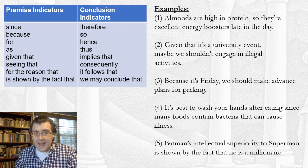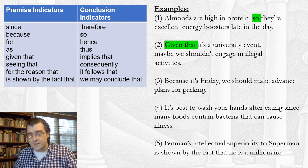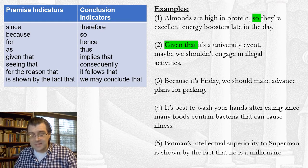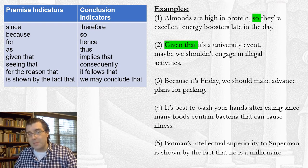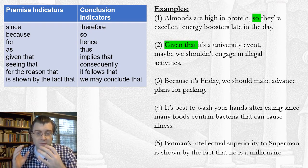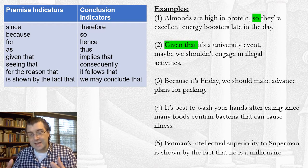You have to ask whether or not the word is being used as a conclusion indicator or as a premise indicator. Look at the first example: 'Almonds are high in protein, so they're excellent energy boosters late in the day.' Here the word 'so' is pretty clearly working as a conclusion indicator. In standard form, we'd have one premise — almonds are high in protein — and one conclusion — almonds are excellent energy boosters late in the day. The 'so' clearly indicates a justificatory relation, showing that part of the sentence is intended as evidence for another part.